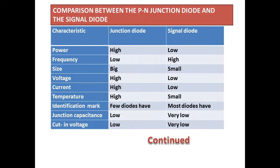Comparison between the PN junction diode and the signal diode. Characteristics: Power - junction diode high, signal diode low. Frequency - junction diode low, signal diode high. Size - junction diode big, signal diode small. Voltage - junction diode high, signal diode low.